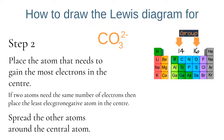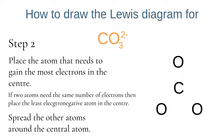Now we need to work out which atom we should place in the center of our Lewis diagram — this is the atom that needs to gain the most valence electrons to be stable. Carbon is in group 14 so it has four valence electrons and needs another four, whereas oxygen is in group 16 so it has six valence electrons and only needs another two to be stable. Because carbon needs to gain the most electrons, we place it in the center and spread the remaining oxygen atoms evenly around it.